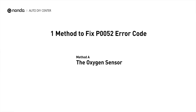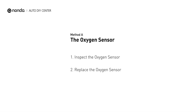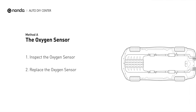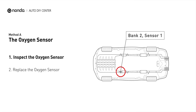Here is a simple DIY method you can try to solve this problem. Method A: the oxygen sensor. This oxygen sensor is located right before the catalytic converter. Bank 2 is on the side with cylinder number 2. Sensor number 1 is usually the one in the exhaust manifold.